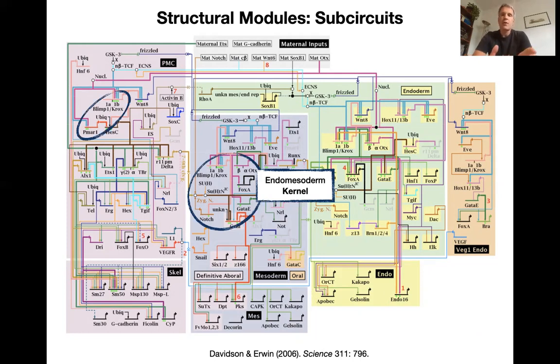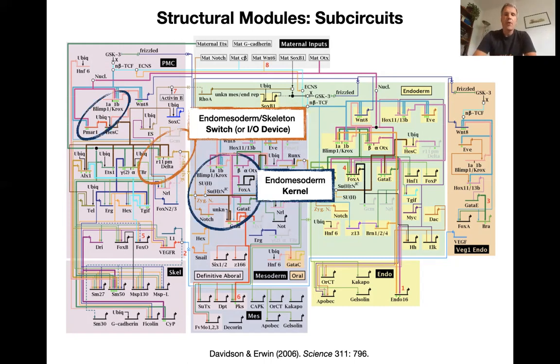But also are the core factors that are at the very center of the network. And Davidson and Irving called these the kernels of the network. And you can see a little trick of this network here. Basically, the same genes are repeated in different places. Here's one blimp one crocs blimp one crox also here blimp one crox. That's because this is a transcription factor that is so central and important that it's redeployed in different contexts during development. So these parts of the network are most conserved and the most central to the functioning of the network. We'll get back to what that means, the function of the network.